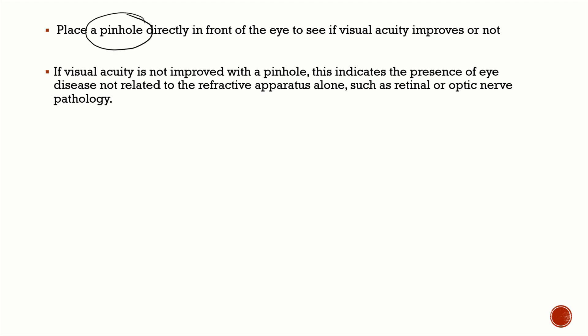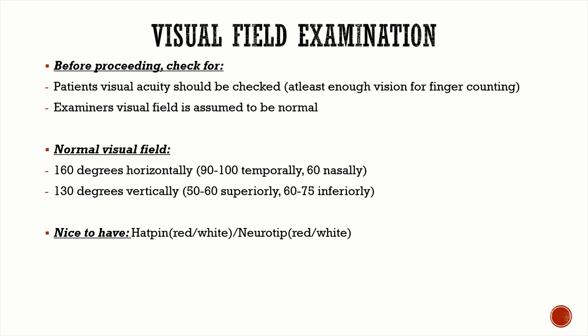The pinhole test is very important. Place a pinhole in front of the eye to see if visual acuity improves. If it's a pure refractive error, visual acuity will improve. If visual acuity does not improve with the pinhole, it means the reduced acuity is not purely due to a refractive error — there is something else going on in the retina or the optic nerve.